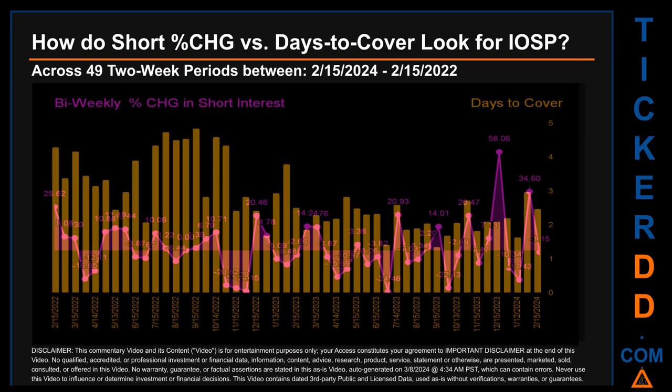Zooming out, I looked across 49 two-week snapshots from the latest found, February 15, 2024, to the oldest found, February 15, 2022. In the graph, I overlaid bi-weekly percentage change in short interest against days to cover across these 49 snapshots. The average percentage change of short interest was about 1.17. The largest percentage increase in short interest was 58.06. The largest percentage decrease was minus 24.46, occurring once on June 30, 2023. The average days to cover was about 2.81, and the biggest days to cover was 4.85, occurring once on September 15, 2022.